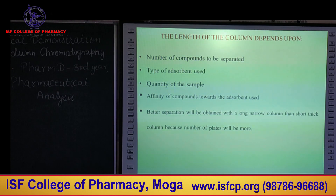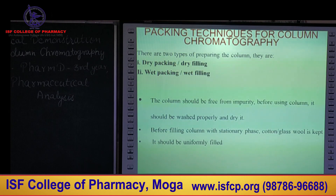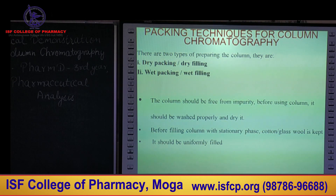The length of column depends upon the number of components to be separated, the type of adsorbent used, the quantity of sample, and the affinity of the compound towards the adsorbent. For better separation we use a long narrow column rather than a short thick column, because there are more hypothetical plates. There are two commonly used techniques for packing the chromatographic column: dry packing or dry filling, and wet packing.